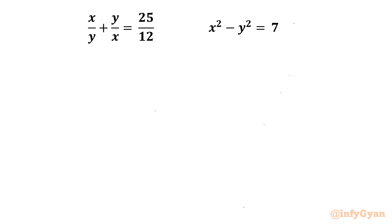Welcome back to Infigyan friends. In this exciting video on system of equations, we are going to take up two equations simultaneously: x over y plus y over x is equal to 25 over 12, and x squared minus y squared is equal to 7. We have to find out x and y. I will demonstrate two different methods to solve this problem.